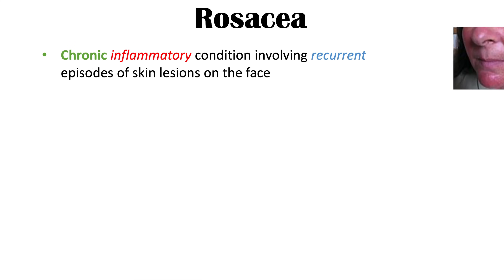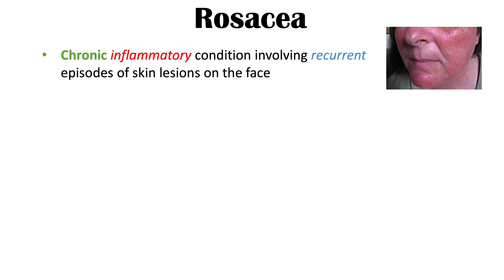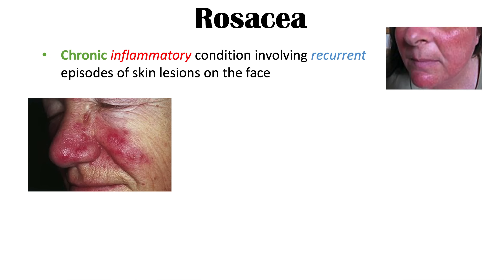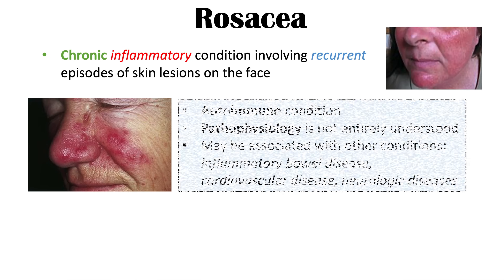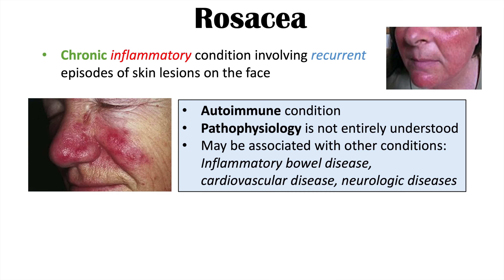Rosacea is a chronic inflammatory condition involving recurrent episodes of skin lesions on the face. Rosacea is an autoimmune condition, which means that it is the patient's own immune system that attacks its own cells and tissues to cause a lot of these signs and symptoms. Although this is known to be an autoimmune condition, the pathophysiology is not entirely understood.